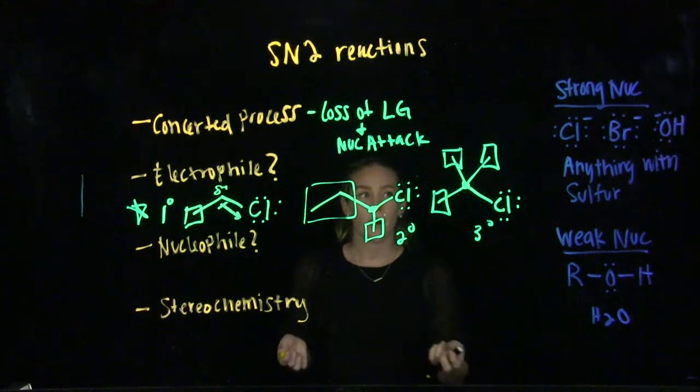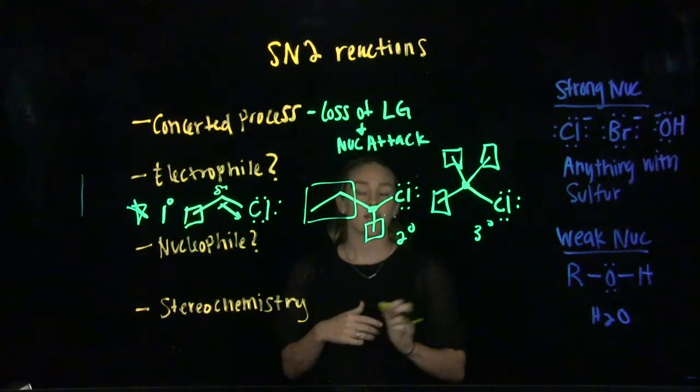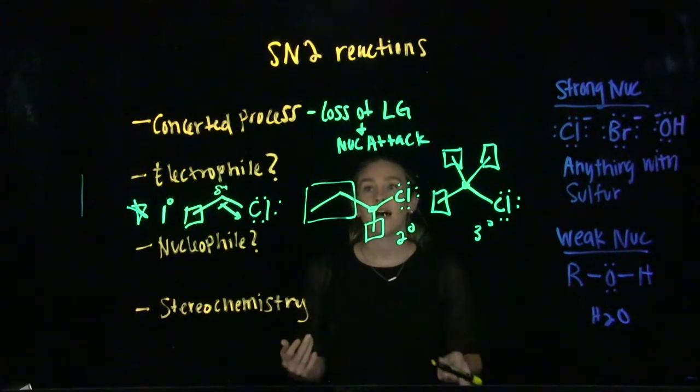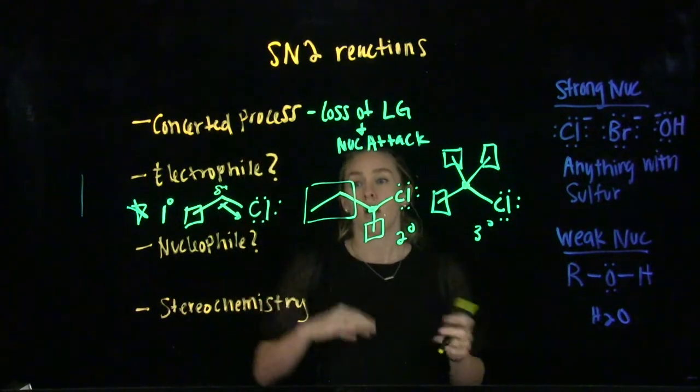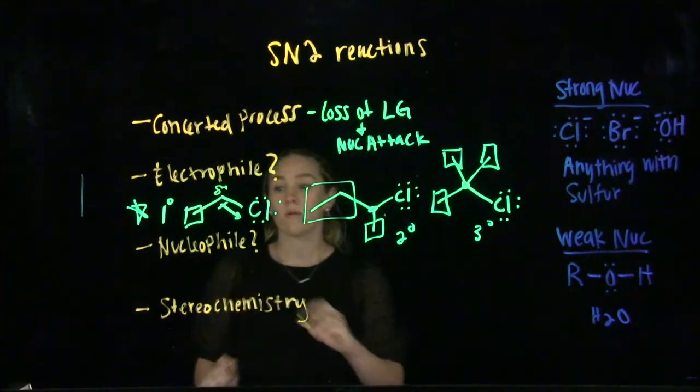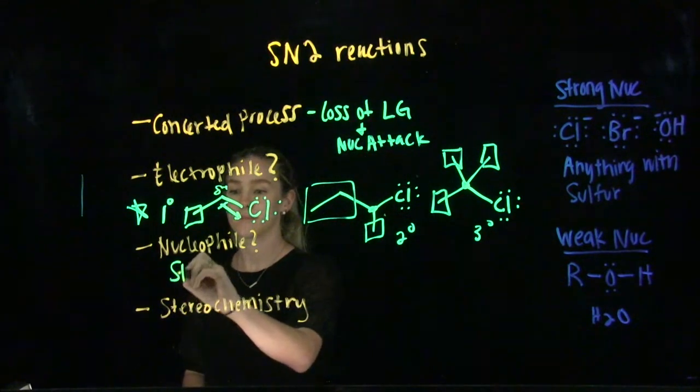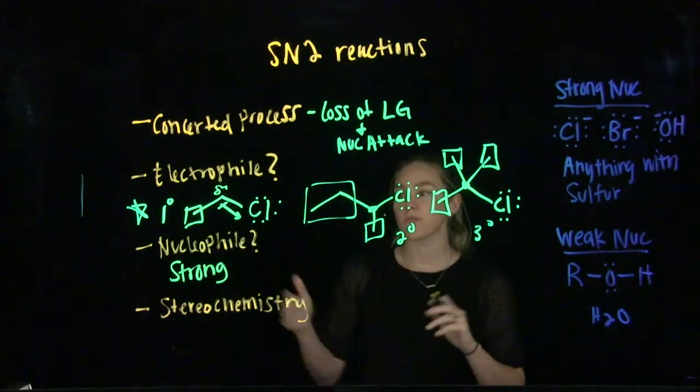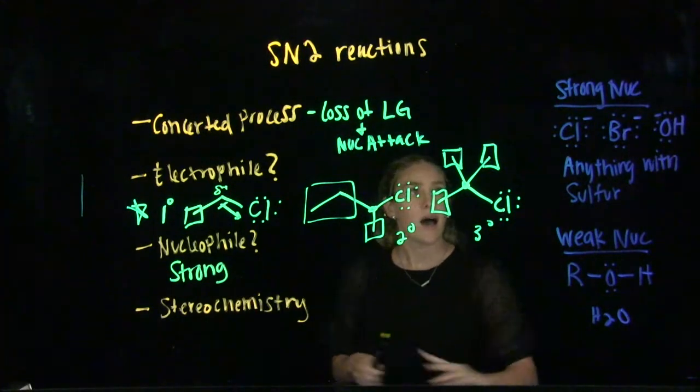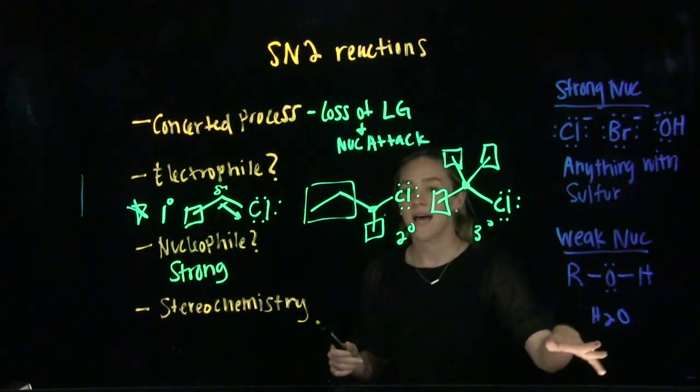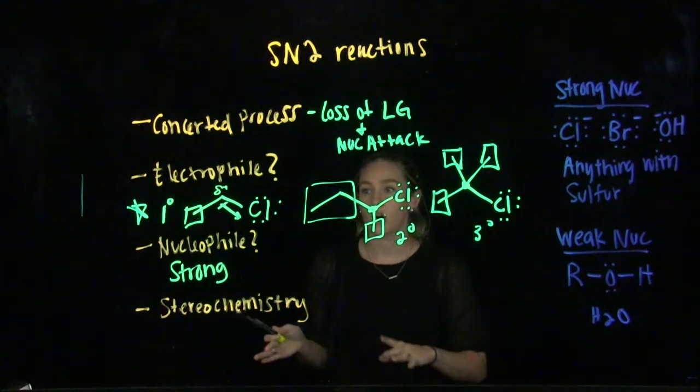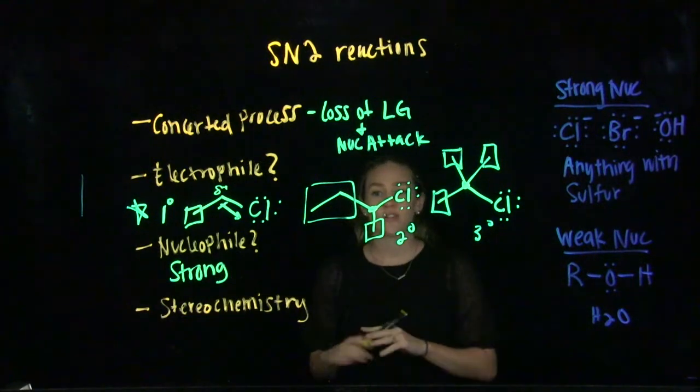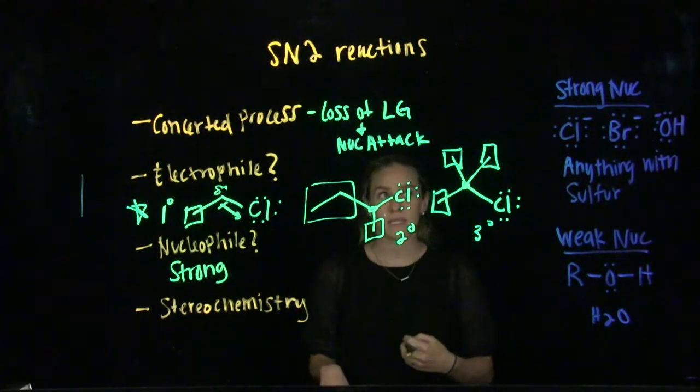As we're talking about our nucleophile, that's also something else that we need to focus on when we're talking about an SN2 reaction. Because this is a concerted process, we need a really, really strong nucleophile to make this happen. There are two classes of nucleophiles. We have strong nucleophiles and we have weak nucleophiles. I have a few written over to the side here. This is not an exhaustive list, but these are just very common ones that you'll probably see a lot.